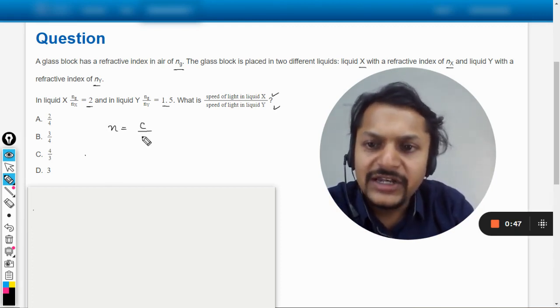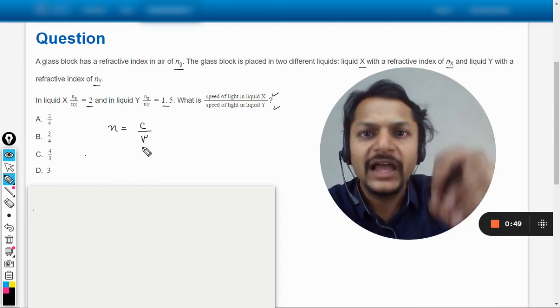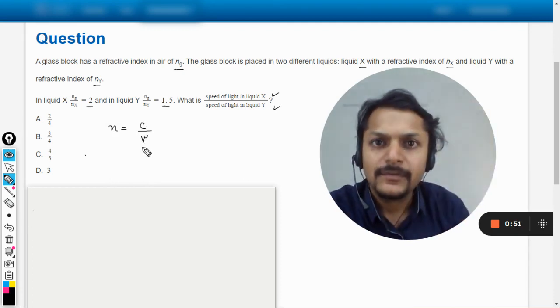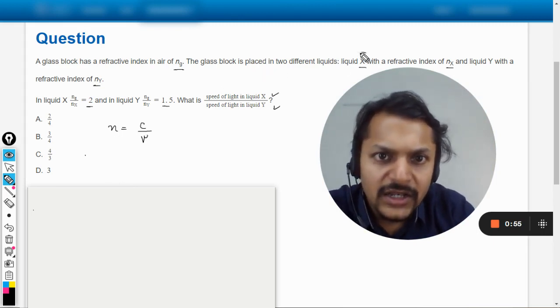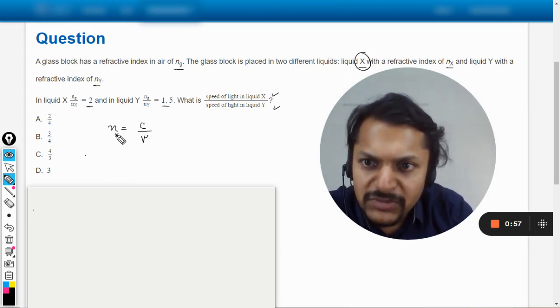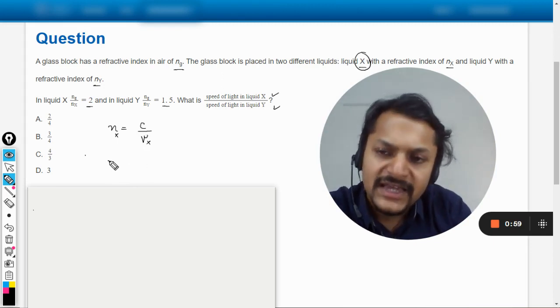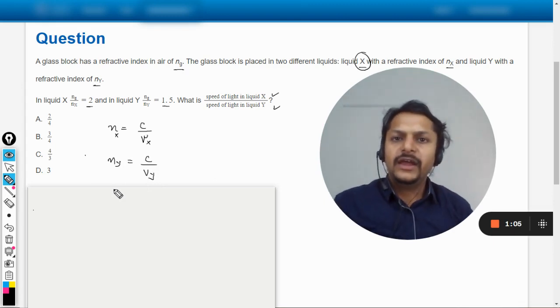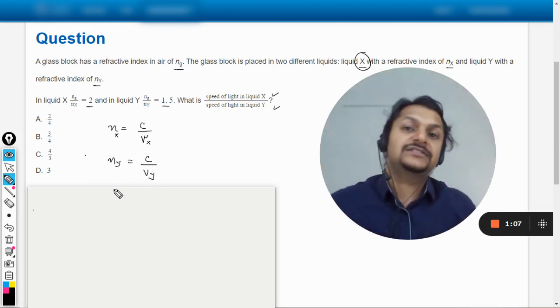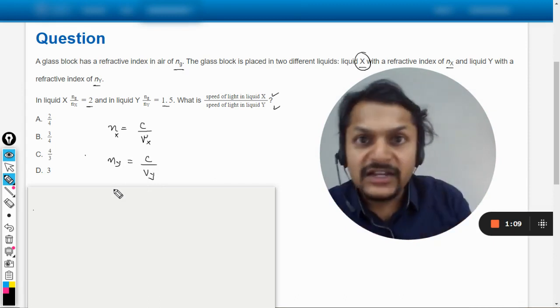So if I talk about the liquid X, the medium X, it will be written like NX = C/VX. And if I talk about Y, it will be written as NY = C/VY. It has nothing to do with the glass - whether the glass is inside liquid or not, we are least concerned about it.